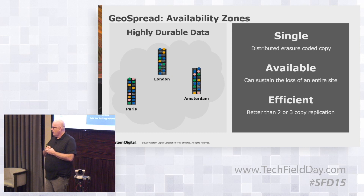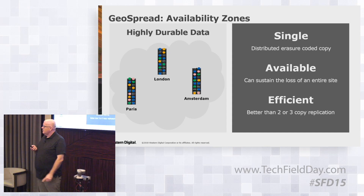GeoSpread supports more than three sites — yes and no. The basis of GeoSpread is three sites. That goes down to protecting the metadata — you want at least two copies of metadata somewhere. The key point is this is a single erasure-coded copy; it's not replication. For two-copy replication, we'd be about 80% of the efficiency of that. For three-copy replication, it's a no-brainer that this would be much more efficient.